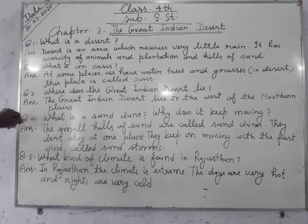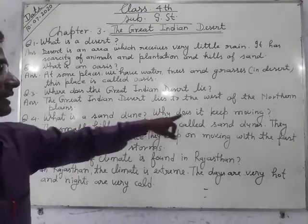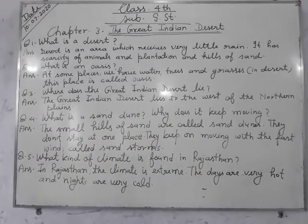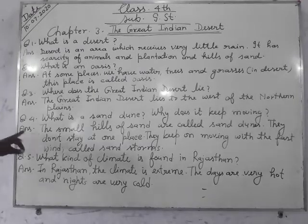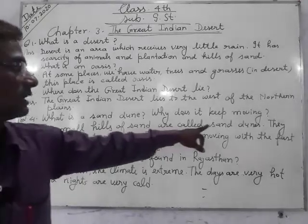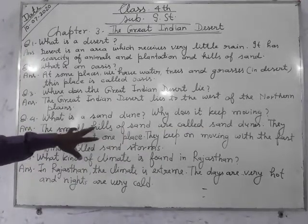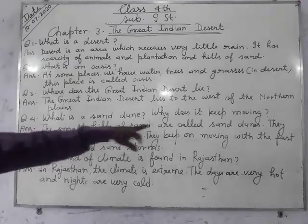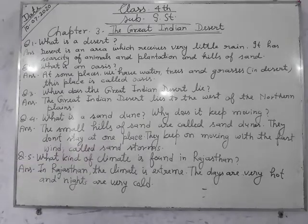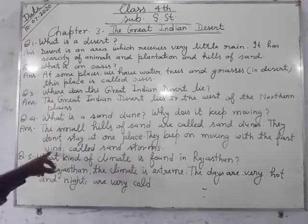Question four: What is a sand dune? Why does it keep moving? These small hills of sand are called sand dunes. They don't stay at one place — they keep moving with the wind.